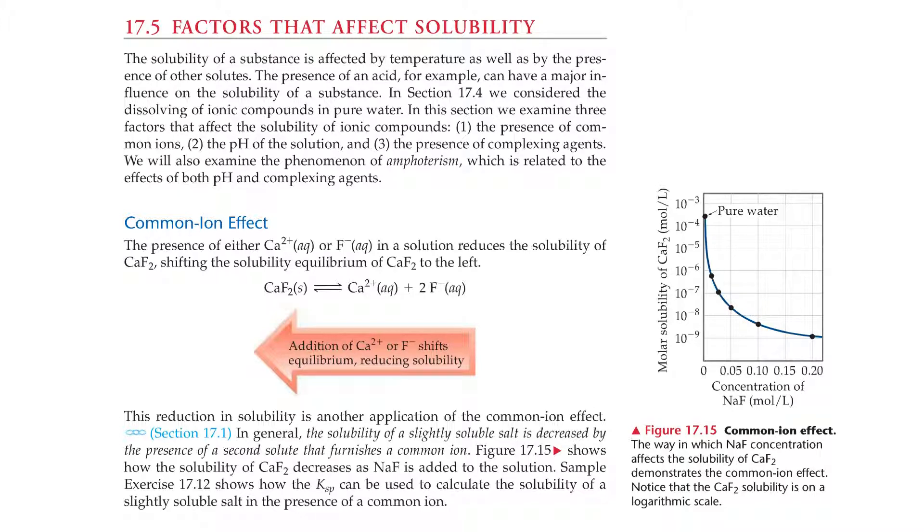In Section 17.4, we considered the dissolving of ionic compounds in pure water. In this section, we'll examine three factors that affect solubility of ionic compounds: the presence of common ions, the pH of the solution, and the presence of complexing agents. We'll also examine the phenomenon of amphoterism, which is related to the effects of both pH and complexing agents.